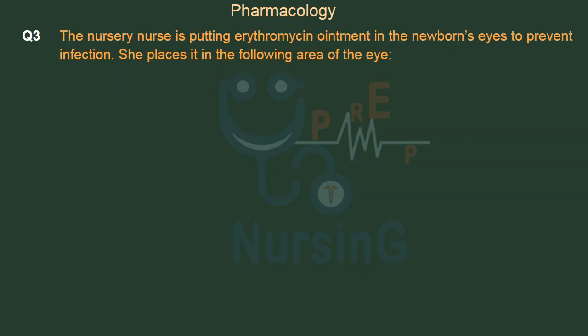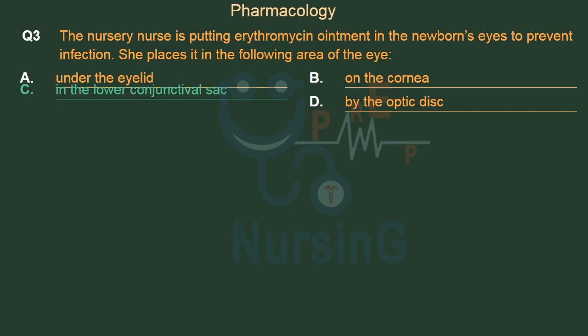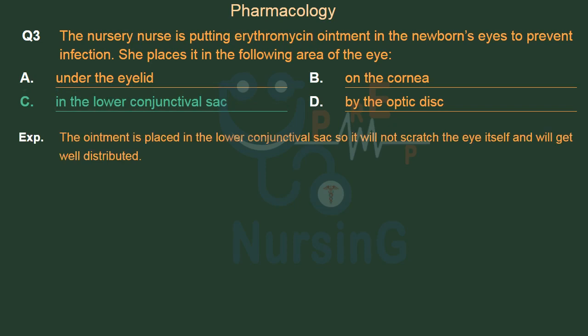The nursery nurse is putting erythromycin ointment in the newborn's eyes to prevent infection. She places it in the following area of the eye — Option A: Under the eyelid. Option B: On the cornea. Option C: In the lower conjunctival sac. Option D: By the optic disc. The right answer is Option C, in the lower conjunctival sac. The ointment is placed there so it will not scratch the eye itself and will get well distributed.